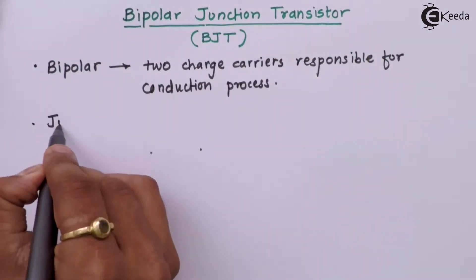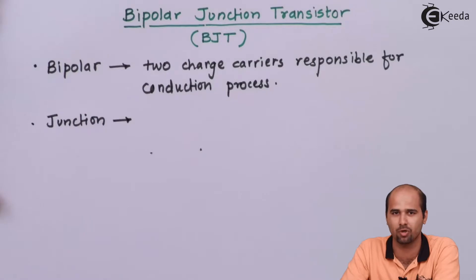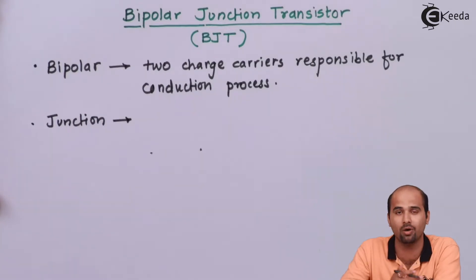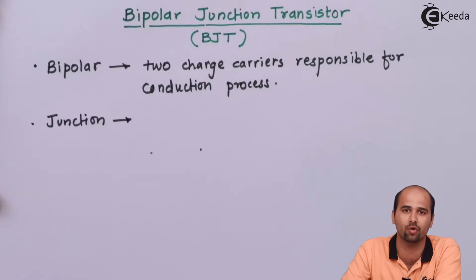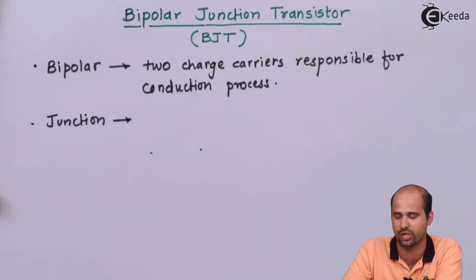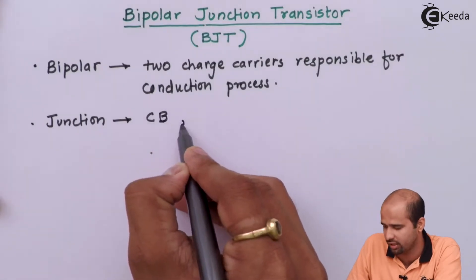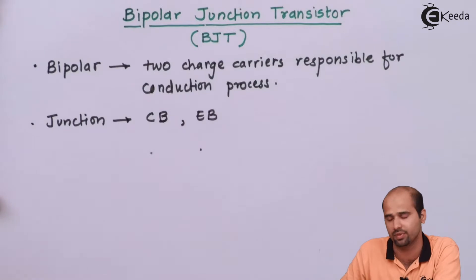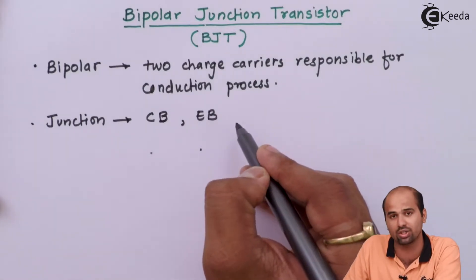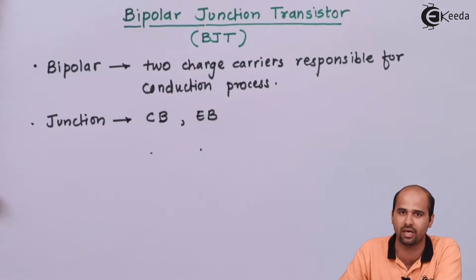The word junction tells you that without junction, anything is impossible in the silicon world. Even for MOSFETs and field effect transistors, a junction gets formed, and due to that junction the transfer of charge carriers happens — this is how the conduction process starts. The junction also tells us that BJT has two junctions: one is the CB junction and another is the EB junction, just like the junction formed in a diode due to two different types of extrinsic semiconductor material.